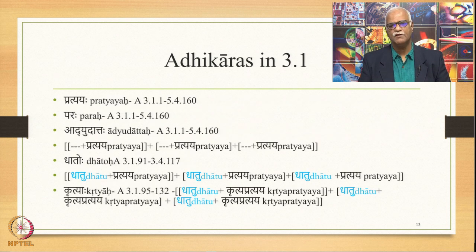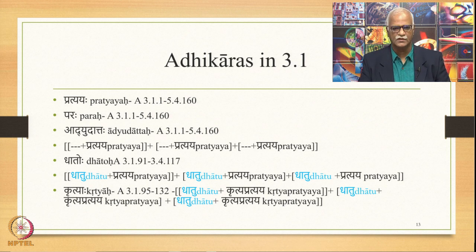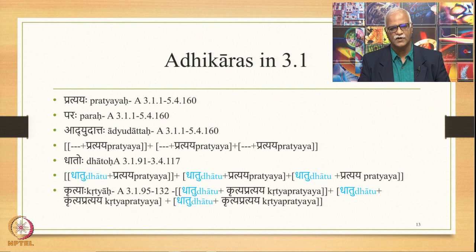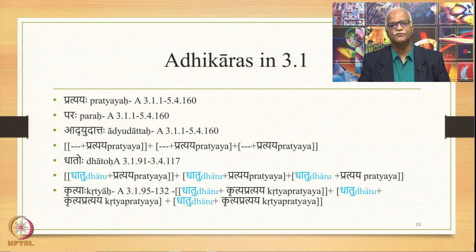Then we go to 3.1. The major Adhikara is Pratyayaha, starting from 3.1.1 and going up to 5.4.160. The next Adhikara is Paraha, which qualifies Pratyayaha — same range. Adhudattaha also qualifies Pratyayaha — same range. So these three Adhikaras govern the entire chapters 3, 4, and 5. This is why this section of three Adhyayas is called Vidhi.